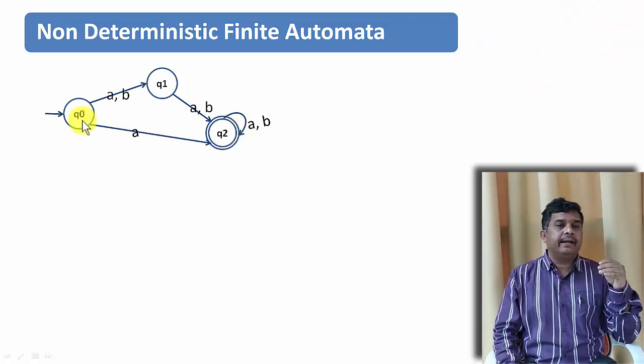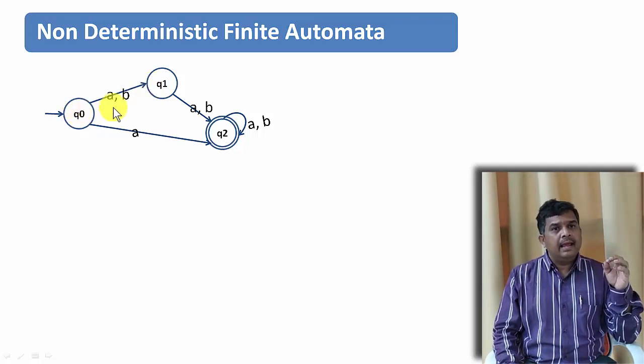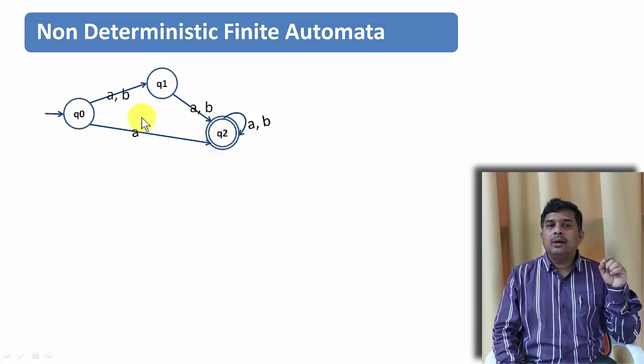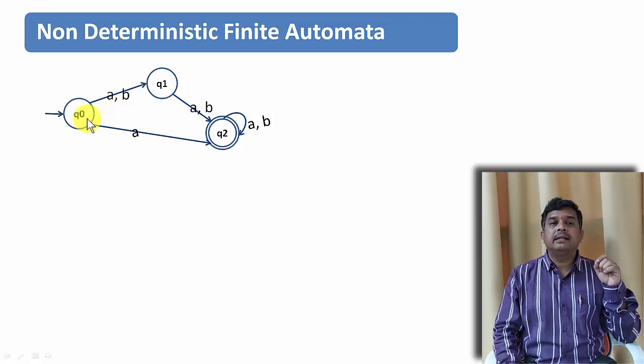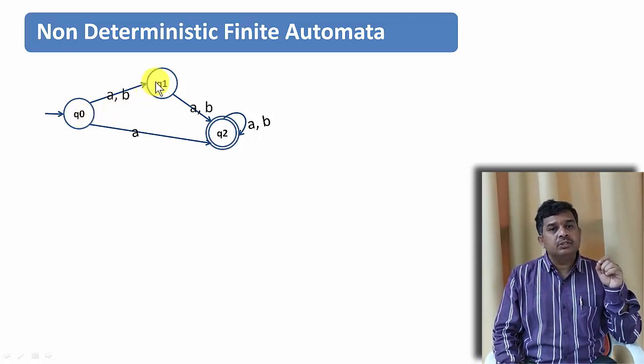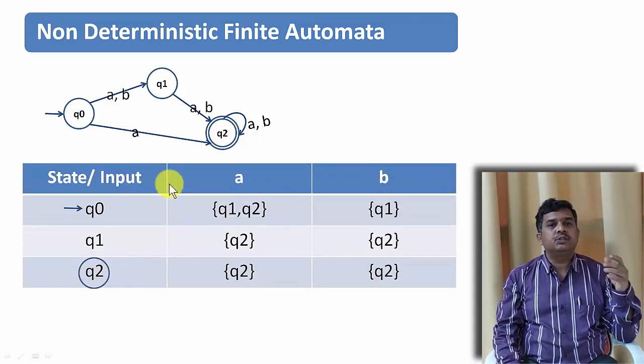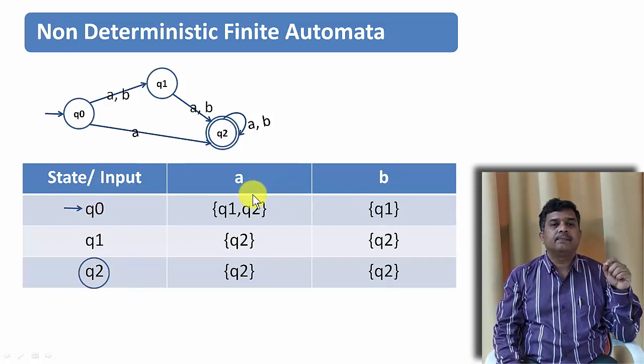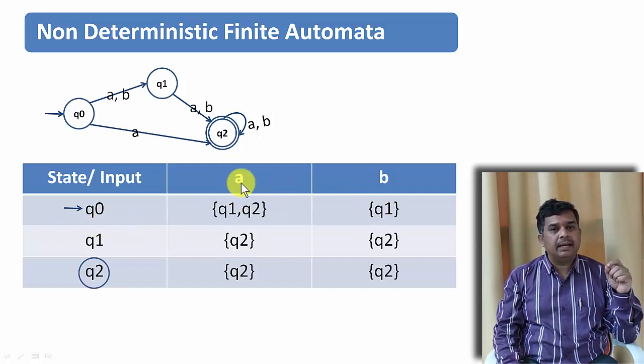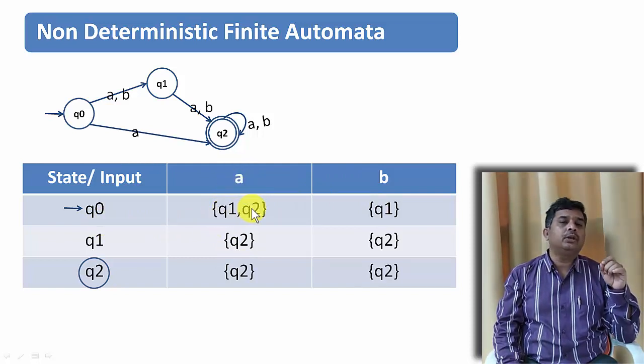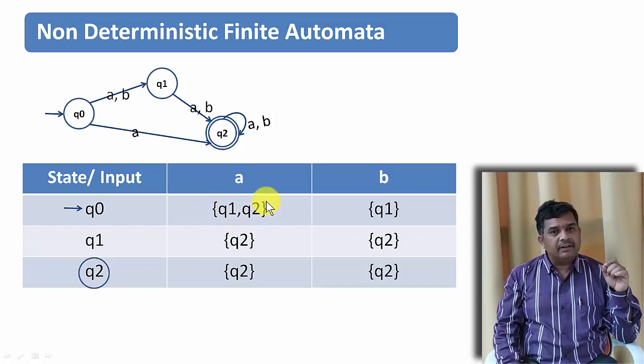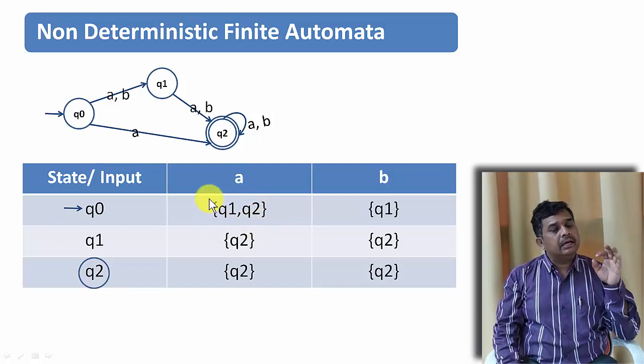Unlike in deterministic finite automata, with A, it is going to Q1 as well as to Q2. It means on receiving A, one cannot say whether the finite automata will go to state Q1 or Q2. So let us see the transition table. In the transition table, as we know, there are rows and columns. The rows indicate number of states and column indicates the input symbols. So on Q0, when we give input symbol A, it goes to state Q1 or Q2. So whatever state it is going, we need to write within curly brackets.